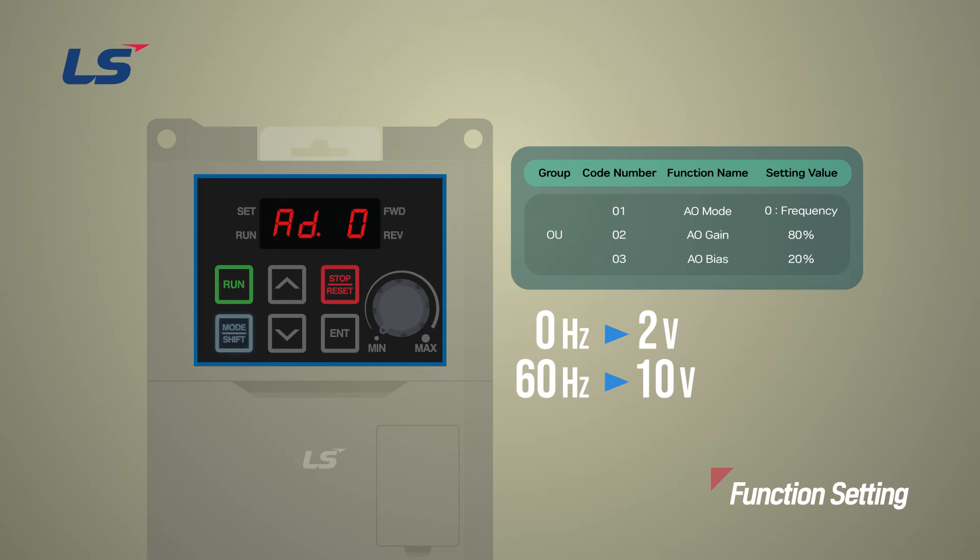First, move to the OU group and set the frequency to zero in AO mode 1. In OU group number 2, AO gain, set the gain for analog output to 80%. And in OU group number 3, AO bias, set the bias value for analog output to 20%.